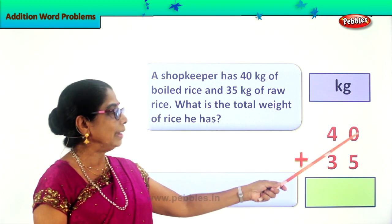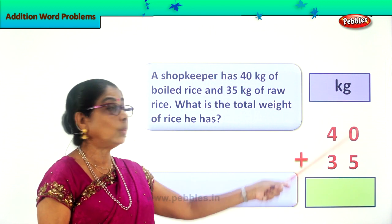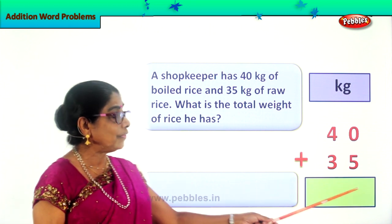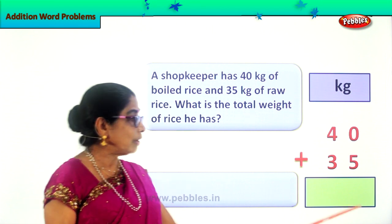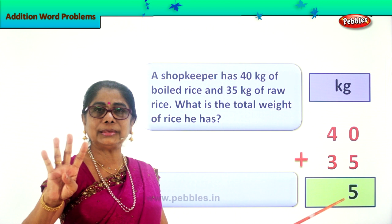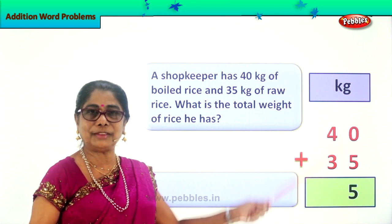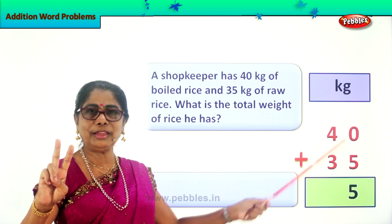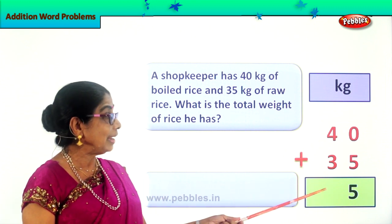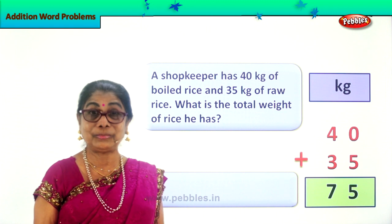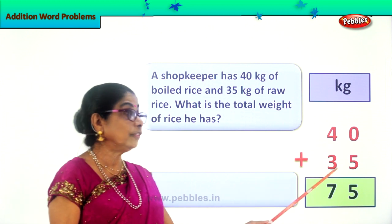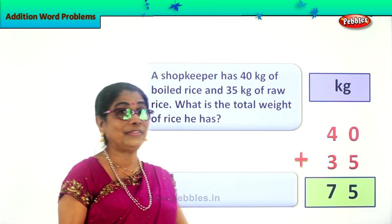Now we have to add 40 plus 35. Let's go to the ones place. 0 plus 5 — what is 0 plus 5? 0 plus 5 is 5 itself. So we put down 5. Now 4 plus 3 — after 4: 5, 6, 7 — 4 plus 3 is 7. So we write down 7. The weight of boiled rice is 40 kg, weight of raw rice is 35 kg, total weight is 75 kg.